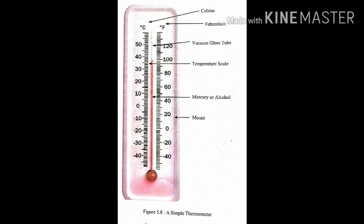The units of measuring temperature are degree Celsius and degree Fahrenheit. As shown in figure 5.8, a simple thermometer — degree C and degree F are the symbols used for indicating degree Celsius and degree Fahrenheit.